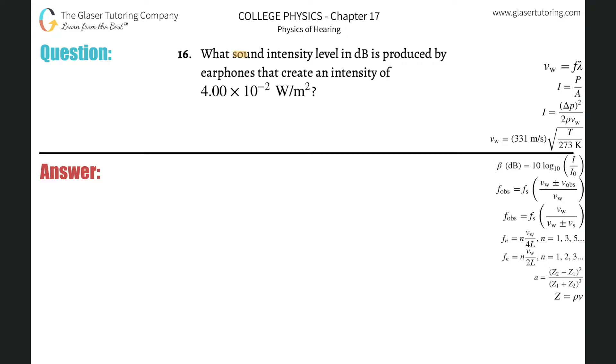Number 16: What sound intensity level in decibels is produced by earphones that create an intensity of 4 times 10 to the minus 2 watts per meter squared? Okay, so we need a formula that relates decibels, or sound intensity level, to that intensity.